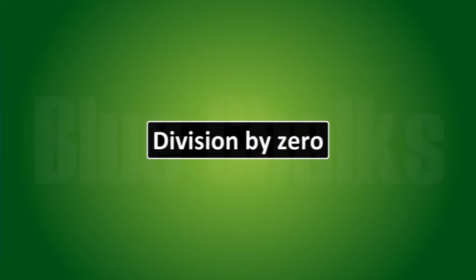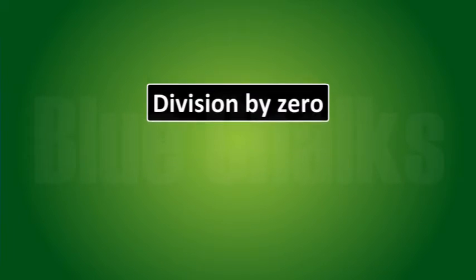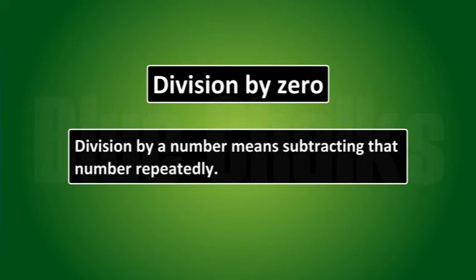Division by 0. Division by a number means subtracting that number repeatedly. Let us find 8 divided by 2.